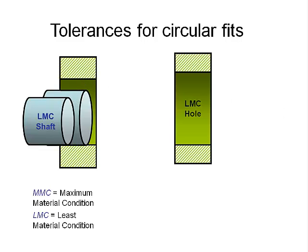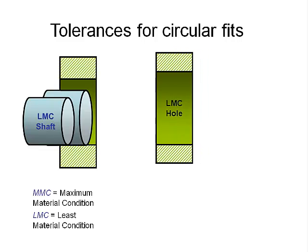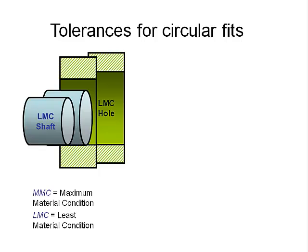Finally, let's take a look at the LMC hole — least material condition hole — where the hole is the biggest and the part has the least amount of material. If we overlay this onto the same diagrams, we can see the full range of holes and shafts that are allowable within our particular tolerance range. We can have a hole ranging from this size to this size, and anywhere in between would be acceptable. Shafts range between the least material condition to the bigger MMC, and these four dimensions basically define the fit for this shaft and hole combination.